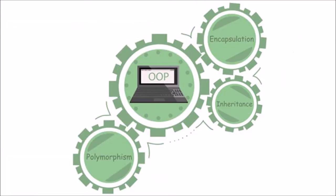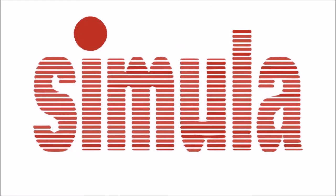The object-oriented paradigm took its shape from its initial concept of a new programming approach, while the interest in design and analysis model came much later. The first object-oriented language was Simula, which was developed in 1960 by researchers at the Norwegian Computer Center.